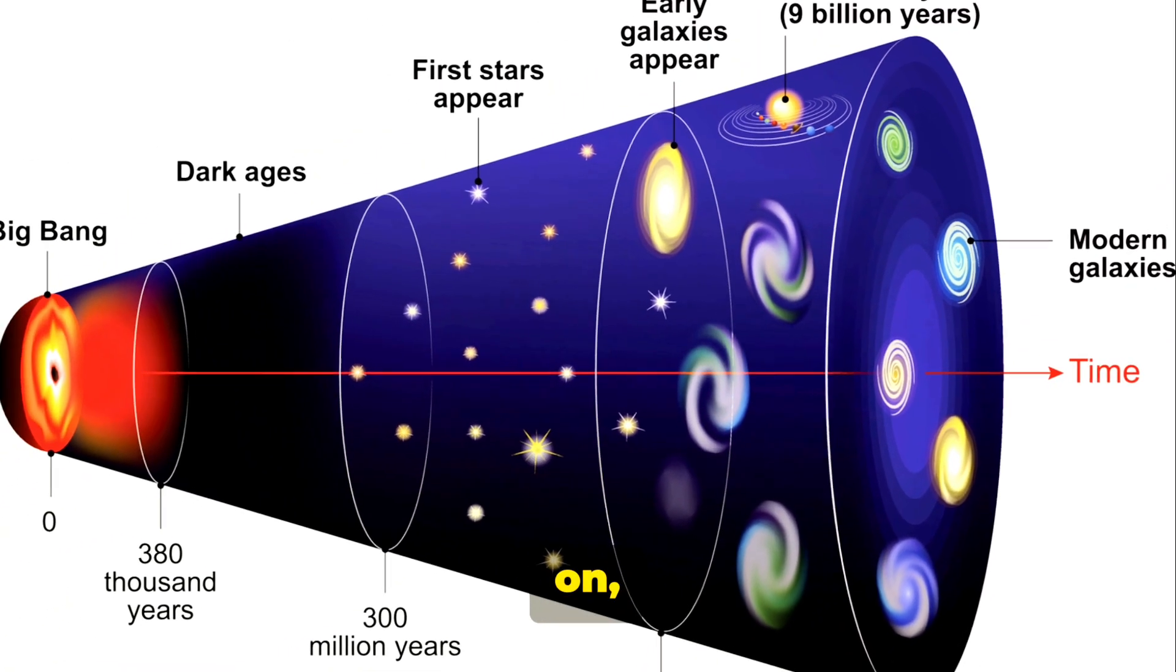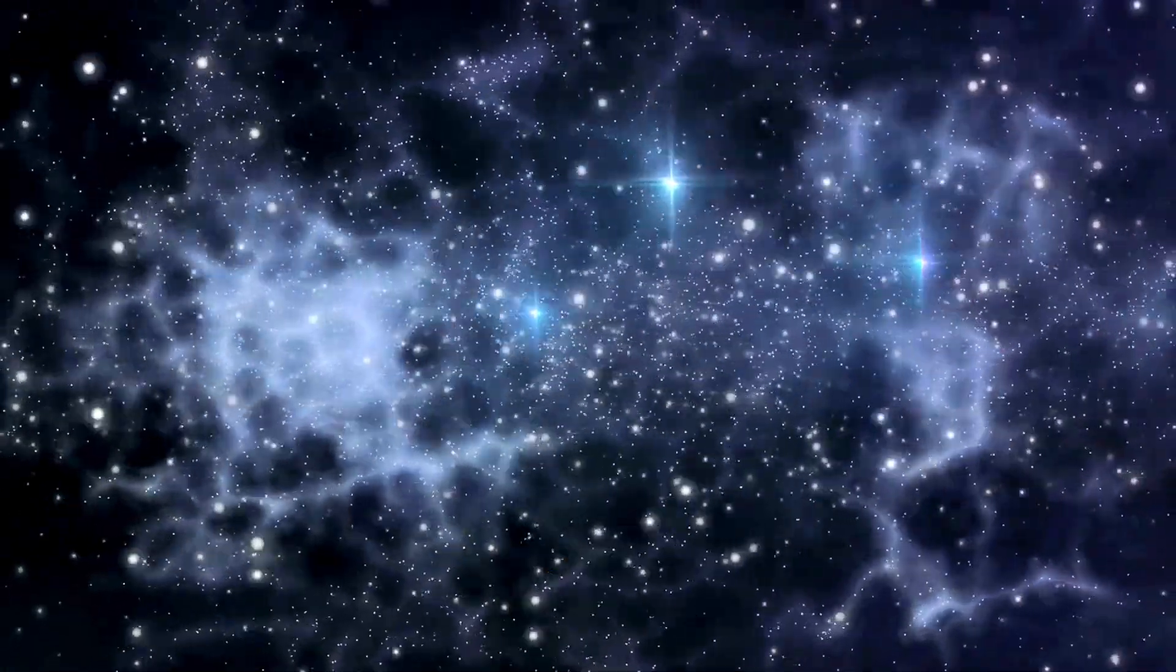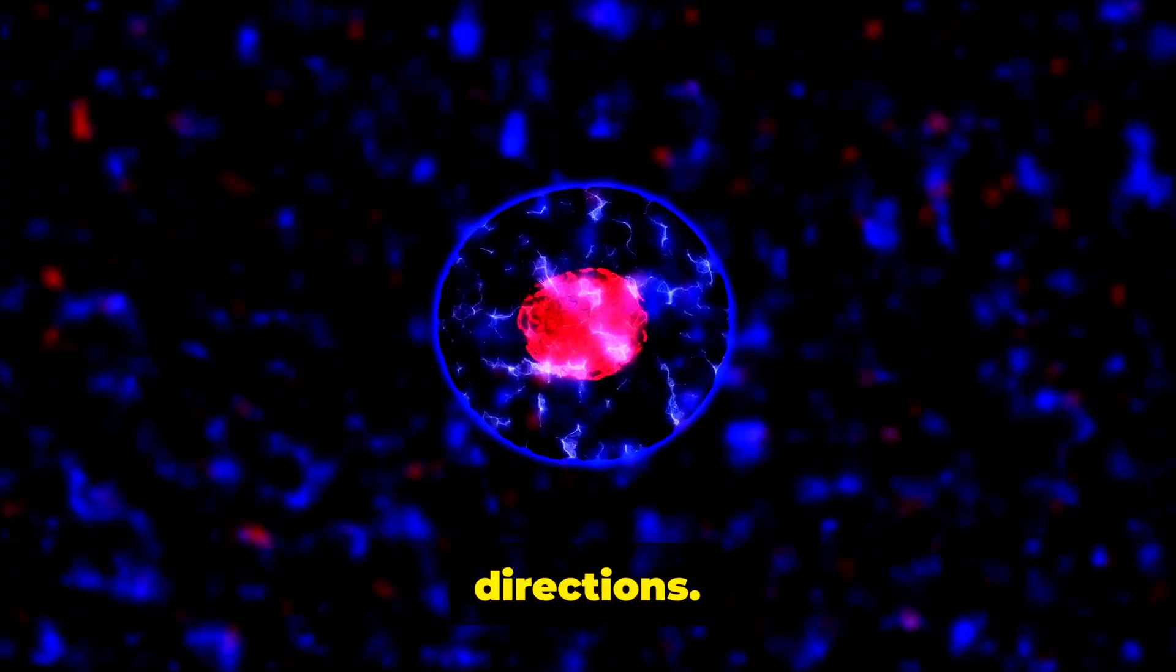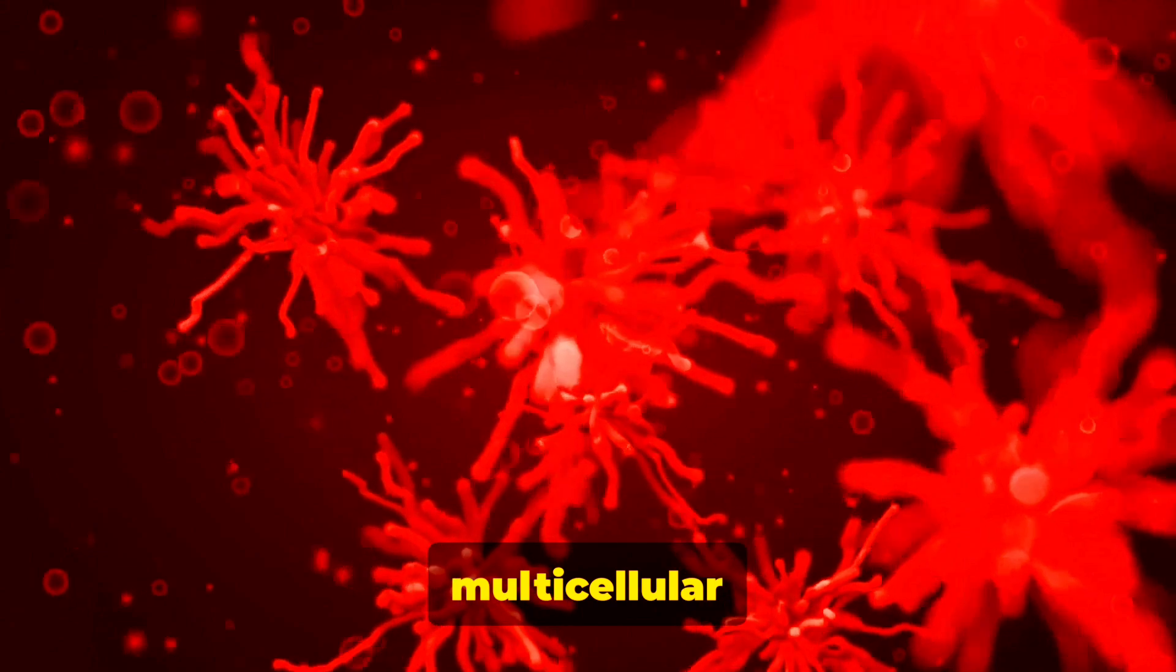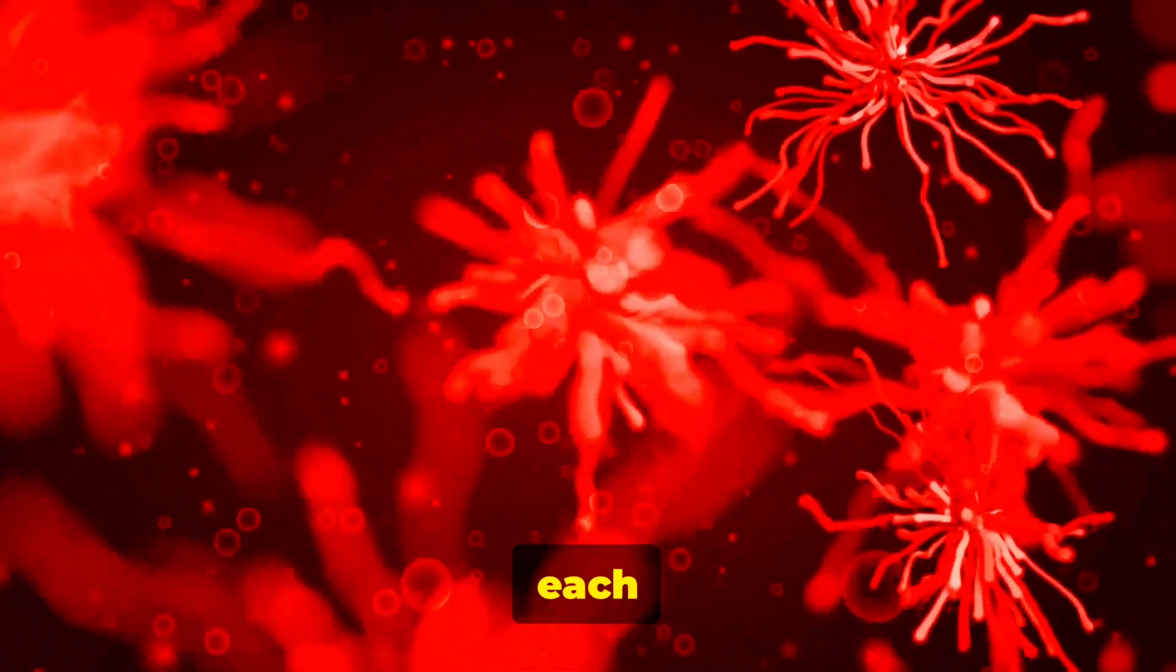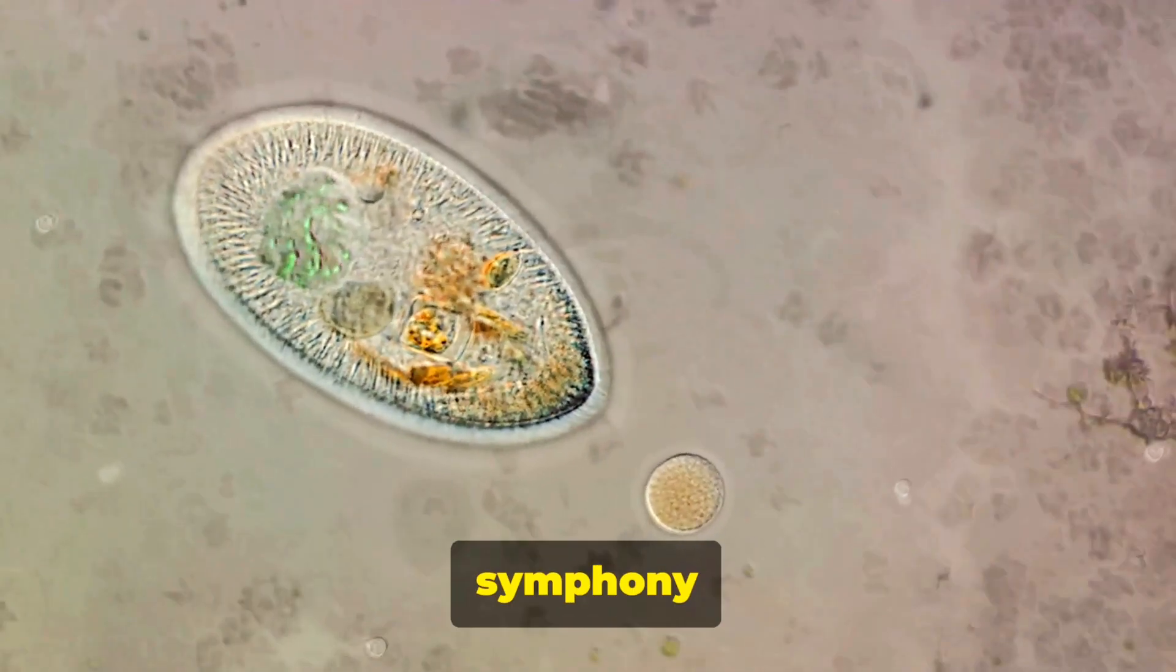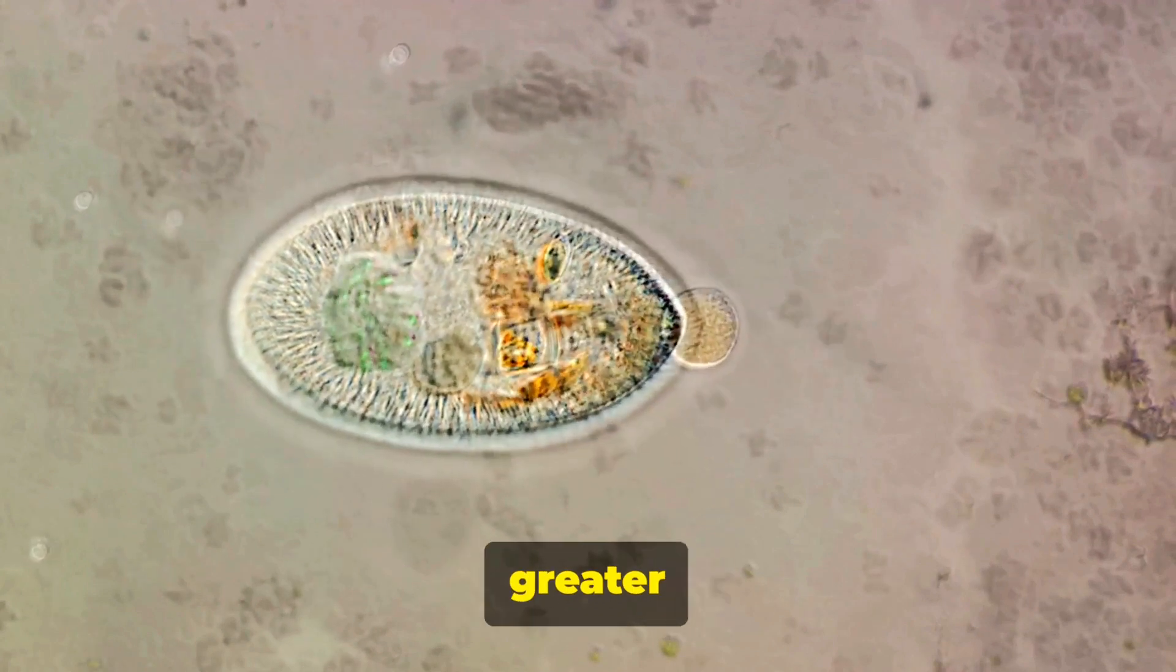As the eons rolled on, our primordial ancestors began to evolve, marking the dawn of a new era. This evolution was not a straight path, but a sprawling tree of life, branching out in all directions. The first major milestone was the leap from single-celled organisms to multicellular ones. Imagine, if you will, a world where individual cells, each with their own life, came together to form complex entities. This was not a mere congregation, but a symphony of cells working in harmony, each performing a unique role for the greater good.